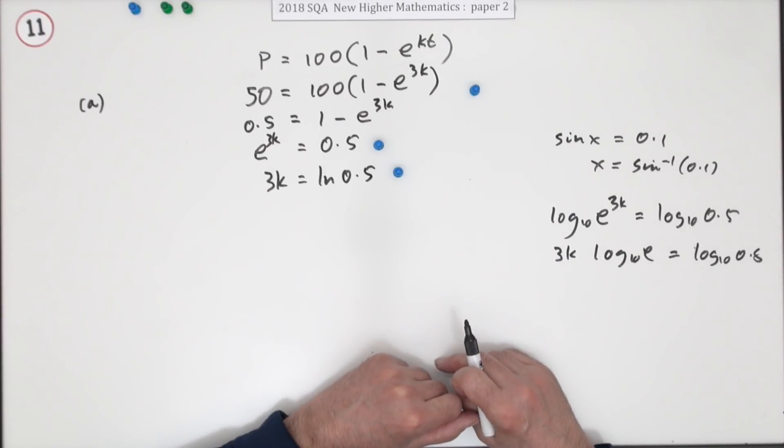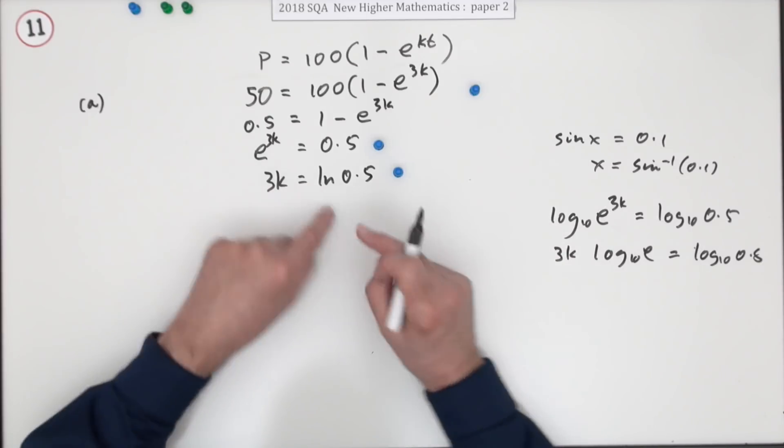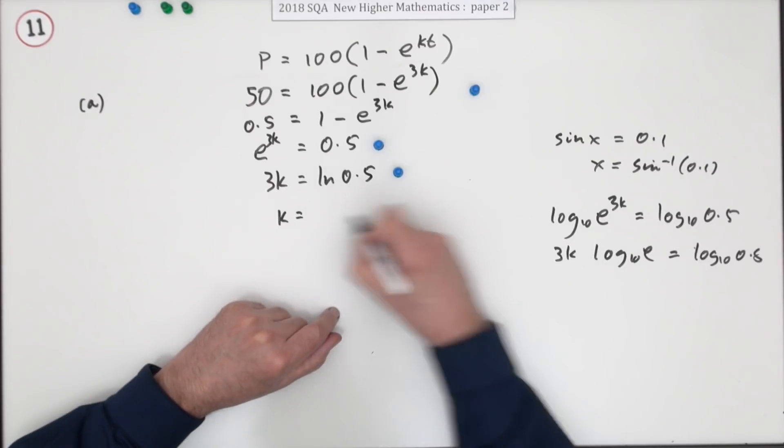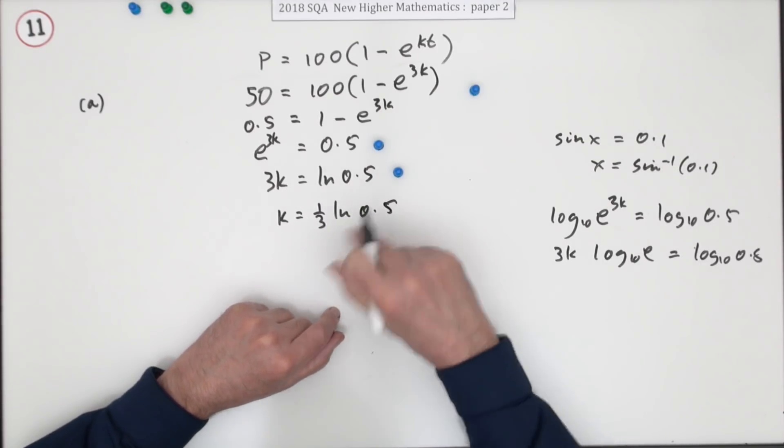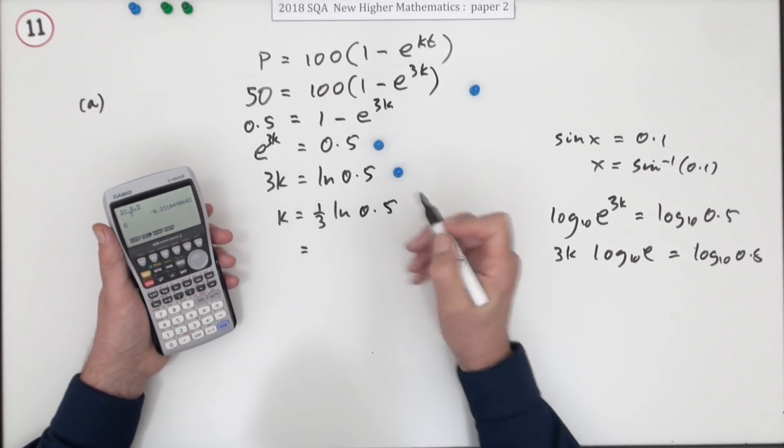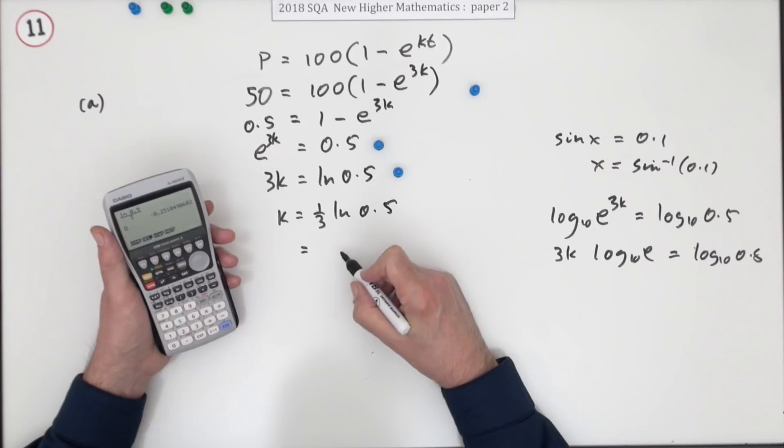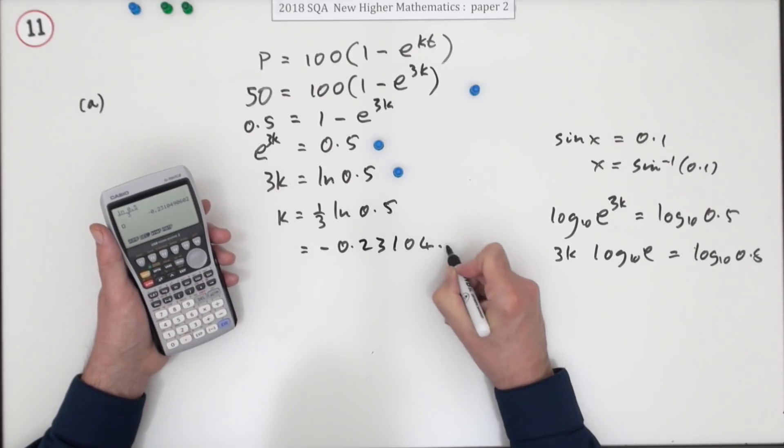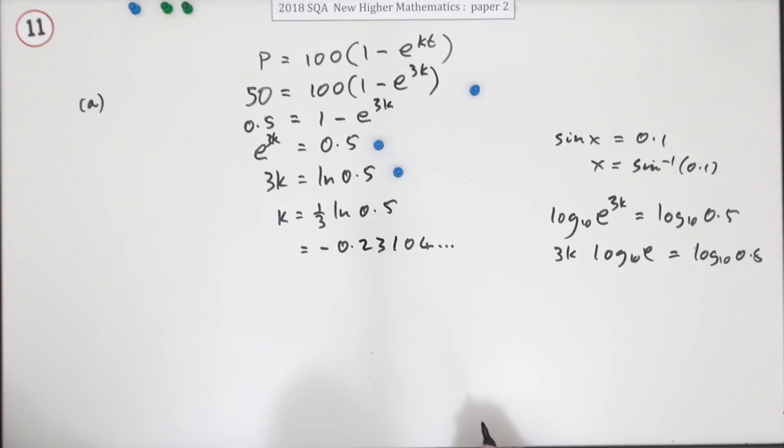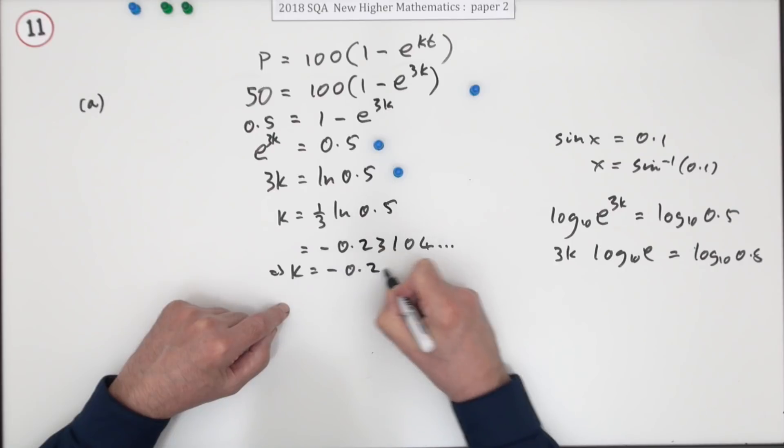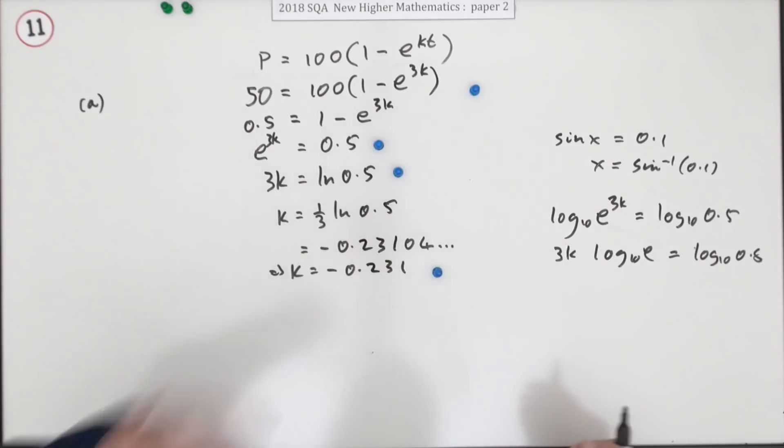But I wouldn't do that, you'd eat simpler just doing the inverse. So you're almost there. So k is going to be, take the 3 across and divide, either that over 3 or a third of it. ln of 0.5, type it in, and when you type it in you get a negative number of course because that's a smaller number than e. Negative 0.23104 and so on, so I'll just write that as negative 0.231 for the last mark.